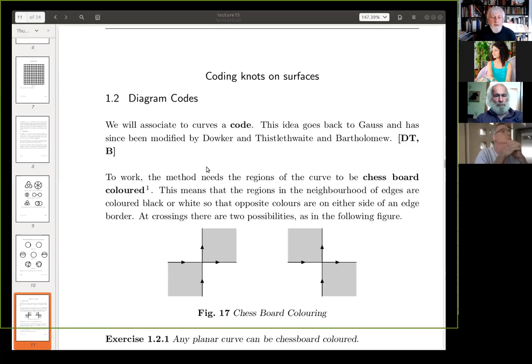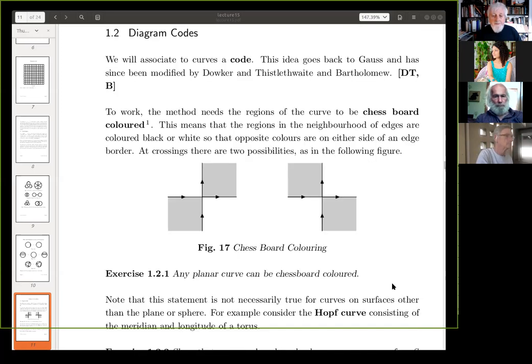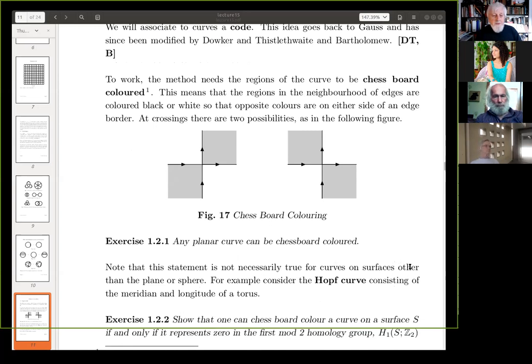And we can chessboard color this, so that this means that regions in the neighborhood of edges are colored black or white, so the opposite colors are on either side of an edge border, and there are actually two possibilities, so you can think of this as a little mini coordinate system, and the, as you come in on the, in the Y direction, from negative Y to positive Y, if you start off with the dark colored area on the left, it's one type, or it could be on the right, which is another type, okay. And of course it depends on how you chessboard color it.